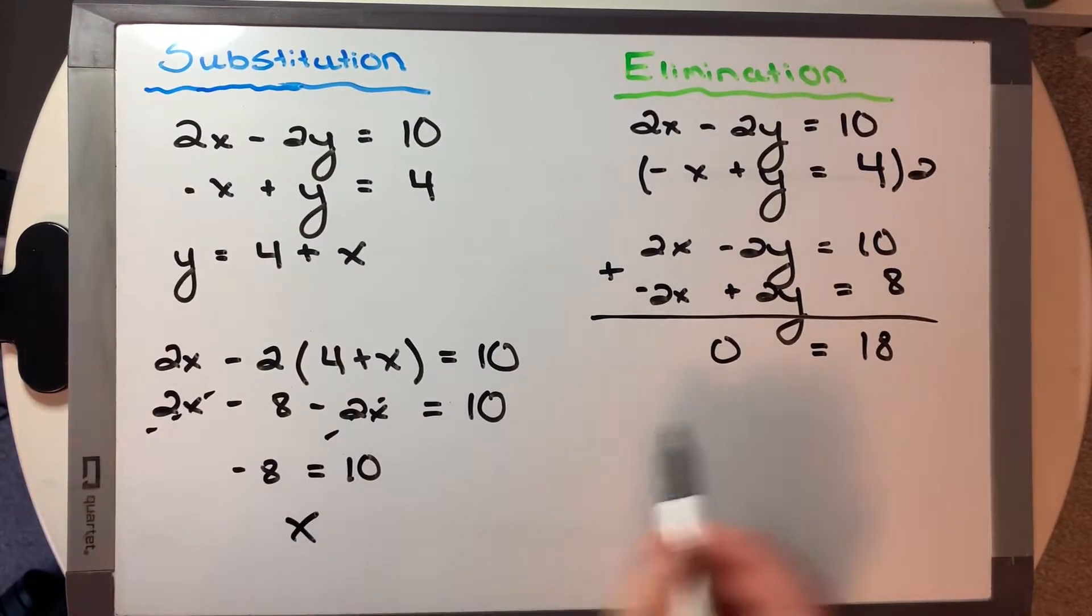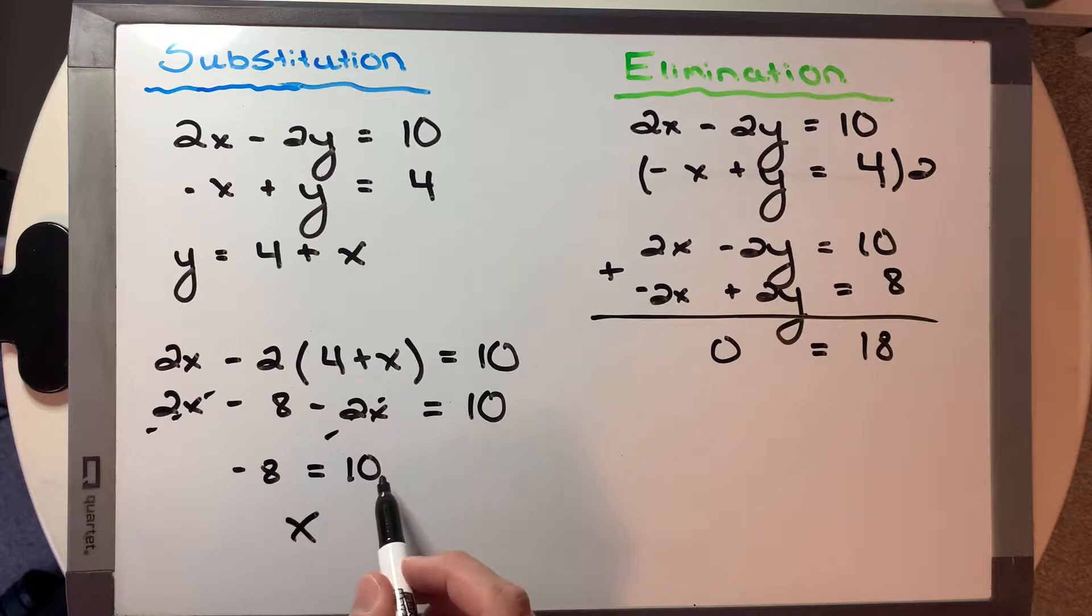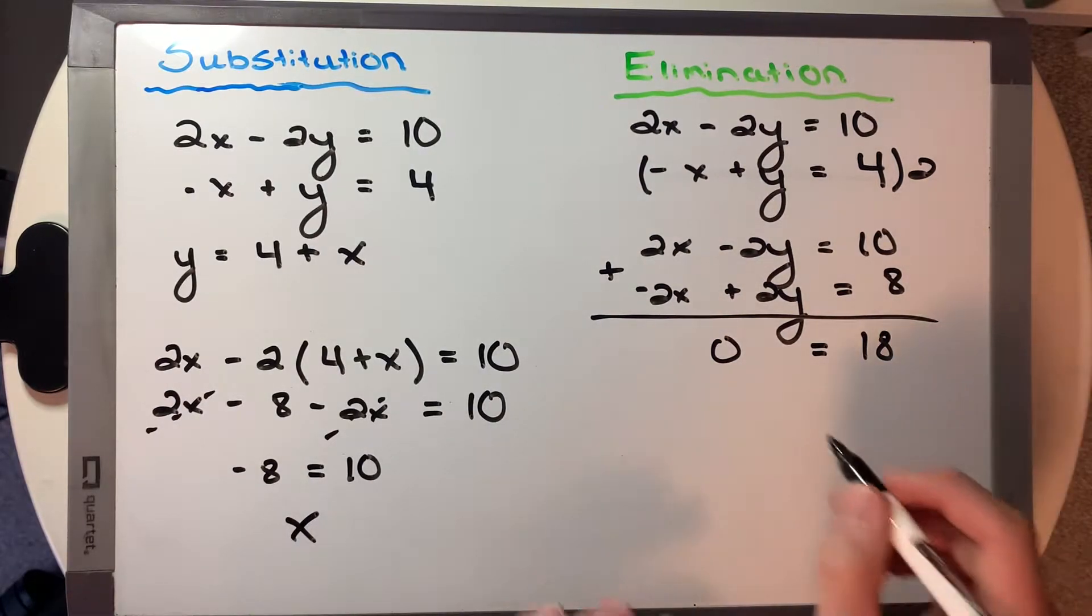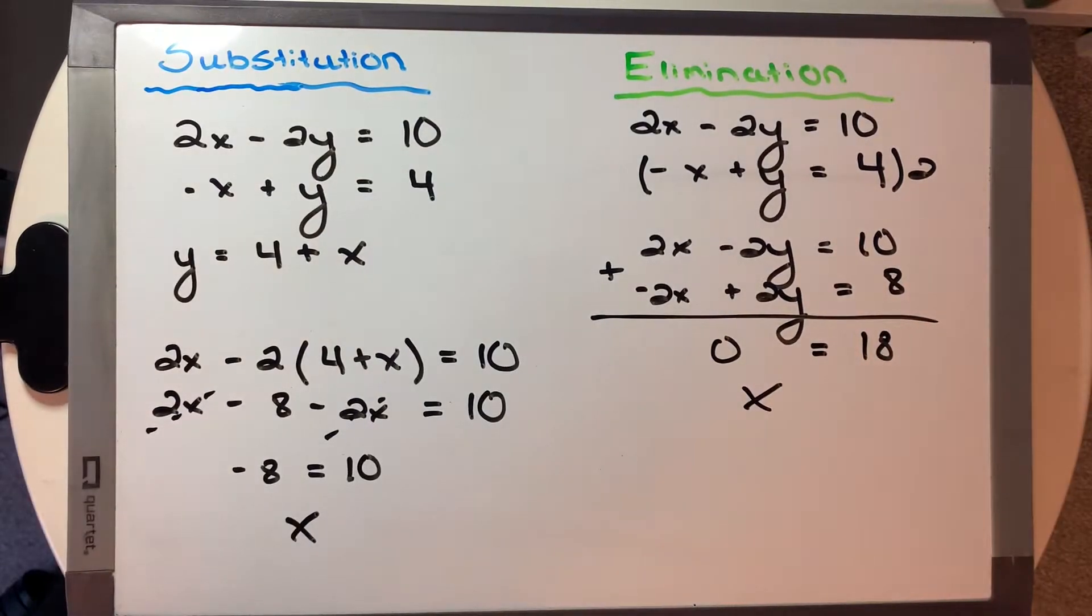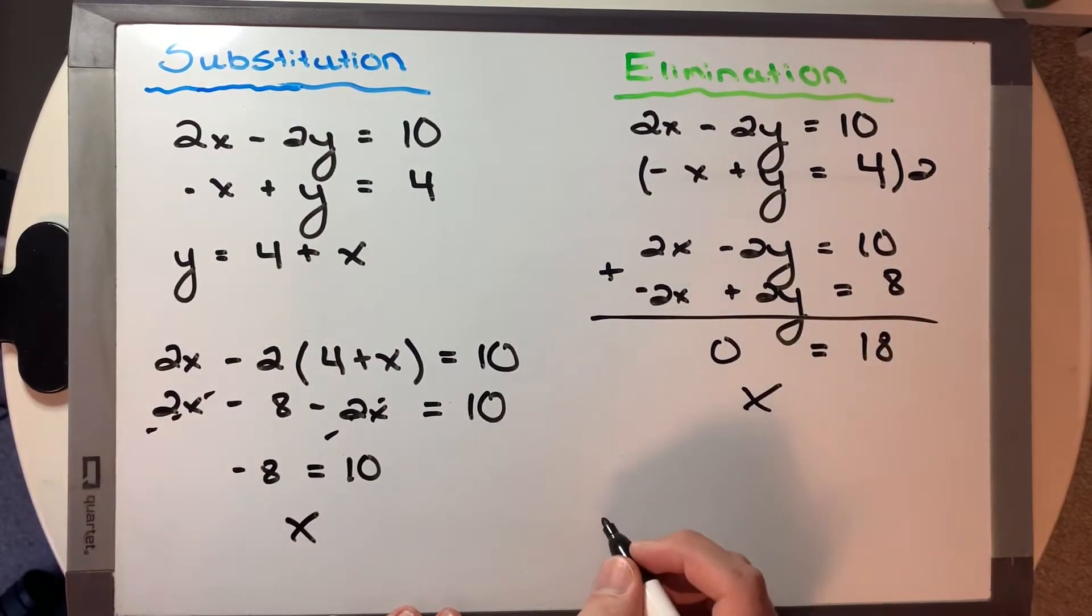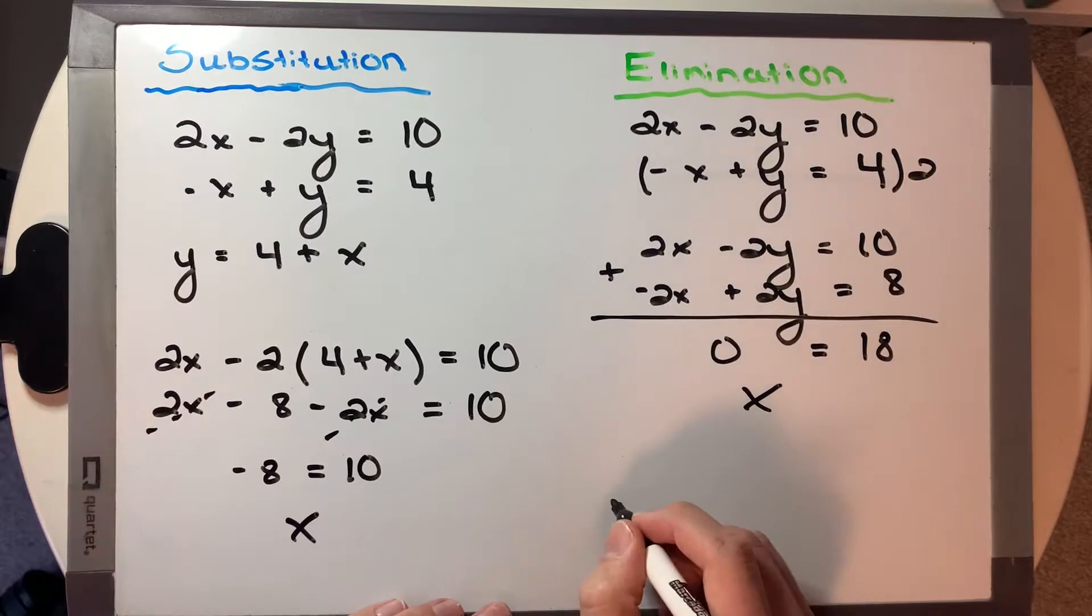Well, that looks the exact same as here. All we'd have to do is move the 8 over to that side, and we'd get 0 equals 18 like this side. So we can conclusively say both of these show that we have no solution.